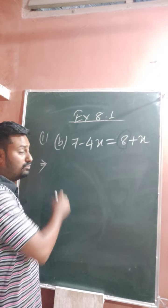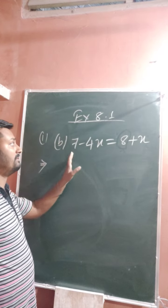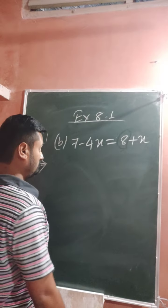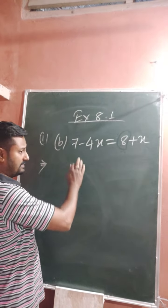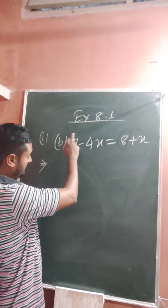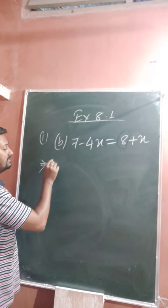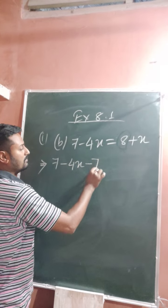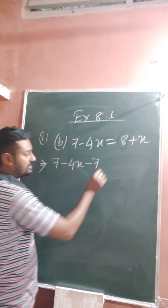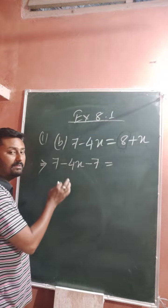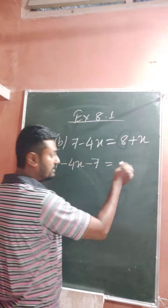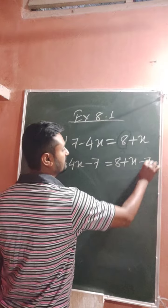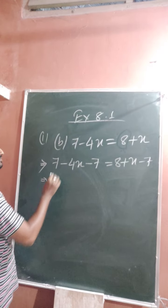Coming to the second question, 1b: 7 minus 4x equals 8 plus x. In the first method, suppose you want to eliminate the 7 first — the 7 is extra here in 7 minus 4x. So you subtract 7 from the left hand side, and you also have to subtract 7 from the right hand side: 8 plus x minus 7.